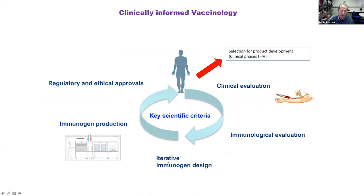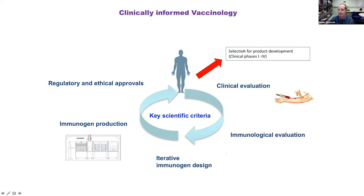The current paradigm is that a Phase 1 trial's primary endpoint is safety and tolerability, with scientific endpoints secondary. Whereas for many of these trials, what we're most interested in is the scientific question — the safety endpoints are really secondary, even though there should be no compromise in terms of safety or risk to participants. The current approach involves designing the immunogen, producing it, getting regulatory and ethical approvals, conducting the clinical evaluation, collecting samples, completing the full immunological evaluation, before returning to a second iterative round of design.